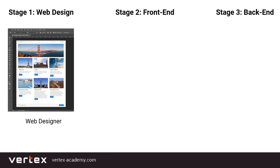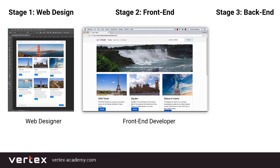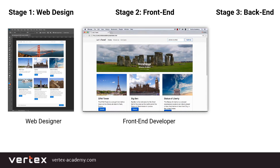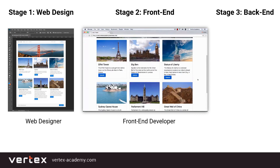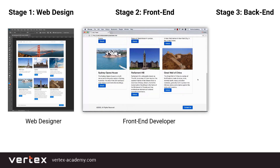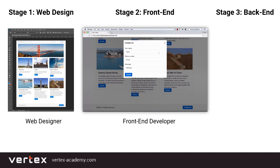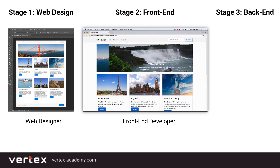Then stage two: the front-end developer turns the static image into a website. The website's visible part, commonly known as front-end, is already done. The text, menu, slider and links of the website already work.